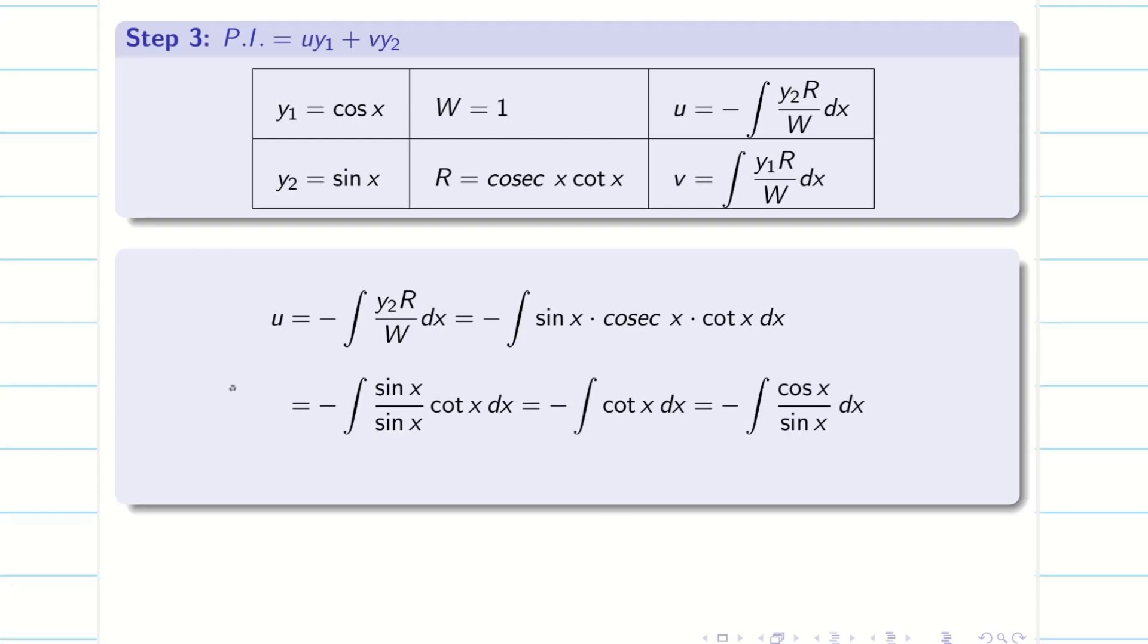Cot is nothing but cos by sin. Do you remember this formula: integral f'(x) over f(x) dx is log f(x). Here we have sin x in the denominator. Differentiation of sin x gives cos x in the numerator. Applying this formula I get u = -log sin x. So u is done.